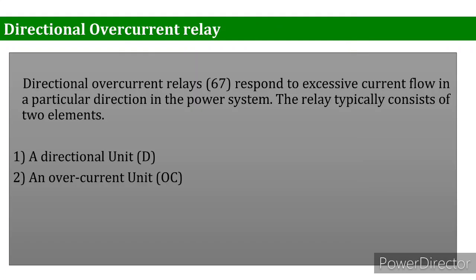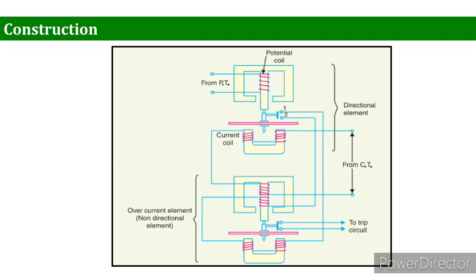The directional overcurrent relay, with ANSI number 67, responds to excessive current flow in a particular direction in the power system. The relay typically consists of two elements: a directional unit and an overcurrent unit. In a previous lecture on overcurrent relay, we did not take the direction of current into account — this relay addresses that, dealing specifically with the direction of overcurrent.